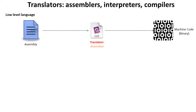We're going to start looking at assemblers, which is our first type of translator. Assemblers, like the name suggests, translate code written in assembly — which is a low-level language — and then, using the one-to-one relationship described in the last video, churn out machine code specific binary for that CPU.